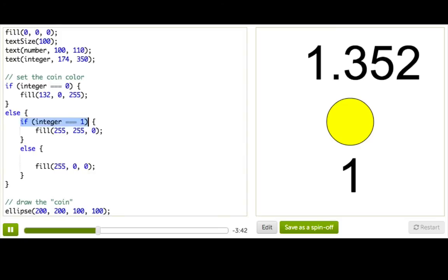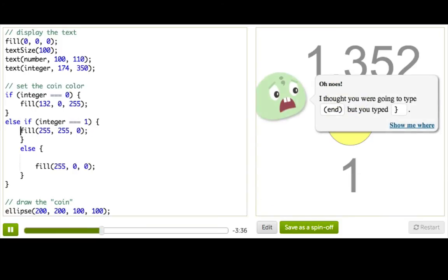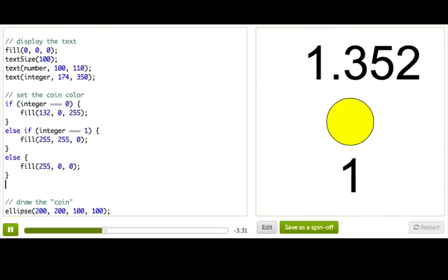All we have is that one if statement and maybe it comes with an else block. Then we can actually combine this condition with the line before and say, else if integer is equal to 1, then set the fill color to yellow. And then this last else block isn't nested anywhere, it just comes at the very end all by itself.